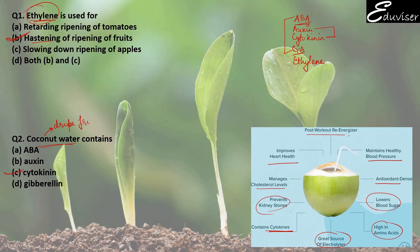Coconut water contains cytokinin. Coconut is basically a drupe fruit, just like mango is also a drupe fruit. This drupe fruit has an edible endospermic layer. It has both solid and liquid types of layers, both edible. The liquid is what you call coconut water, and the solid part is the kernel. So the answer here is cytokinin.